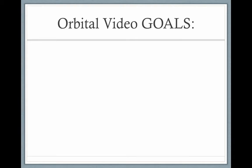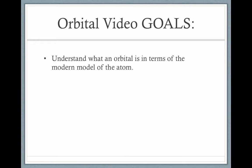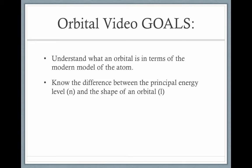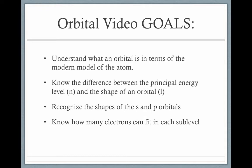Welcome to Unit 7, Video 3: Orbitals. By the end of this video, you should understand what an orbital is in terms of the modern model of the atom. You should know the difference between the principal energy level, represented by the letter N, and the shape of the orbital, or the sublevel, represented by the letter L. You should recognize the shapes of the S and P orbitals, though we'll look at D and F as well, and you should know how many electrons can fit into each sublevel.